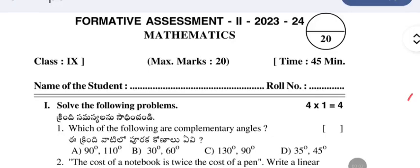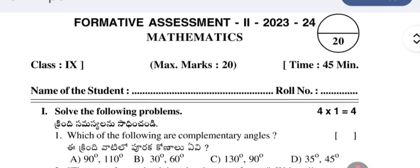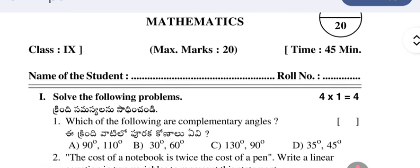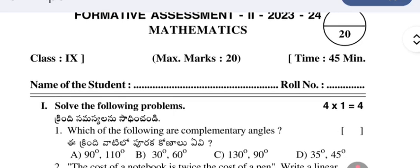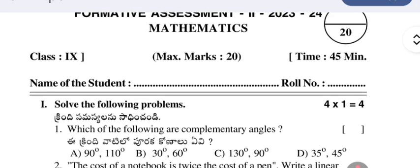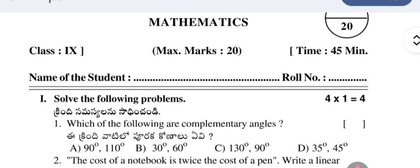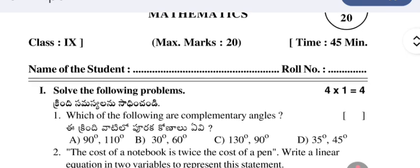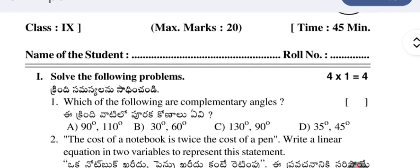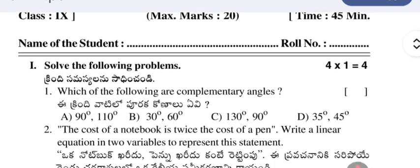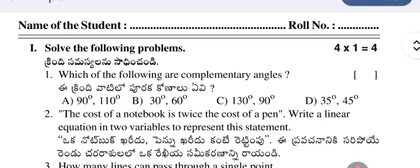Hello, welcome to my YouTube. Today's question paper is Formative Assessment 2, 2023-24, subject Mathematics, Class 9th. In the year 2023-24, the FA2 was conducted for only 20 marks and the time given was 45 minutes. This year the pattern has changed — the question paper will be for 35 marks — but this question paper will be very useful for practice purposes.